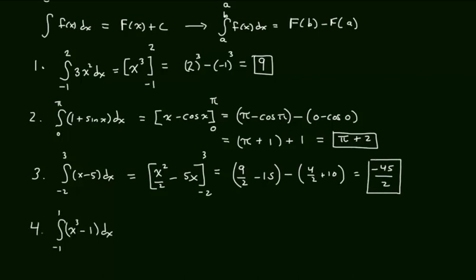Example 4. The integral from negative 1 to 1 of quantity x cubed minus 1 dx. So, we have x to the 4th over 4 minus x. Taking that from negative 1 to 1. So, I have 1 fourth minus 1 minus 1 minus 1 fourth plus 1. 1 fourths cancel out and I'm left with negative 2.